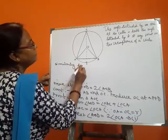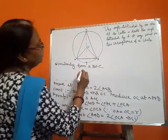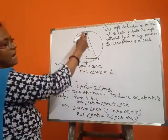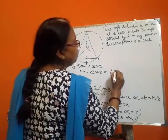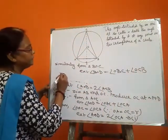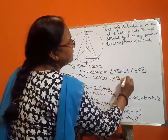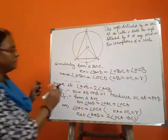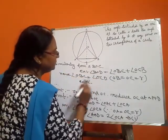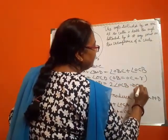Similarly, from triangle BOC, external angle BOD equals the sum of the two opposite interior angles: angle OBC plus angle OCB. And angle OBC equals angle OCB because OB equals OC equals R, the radius of the same circle. So, exterior angle BOD equals 2 times angle OCB. This is equation 2.